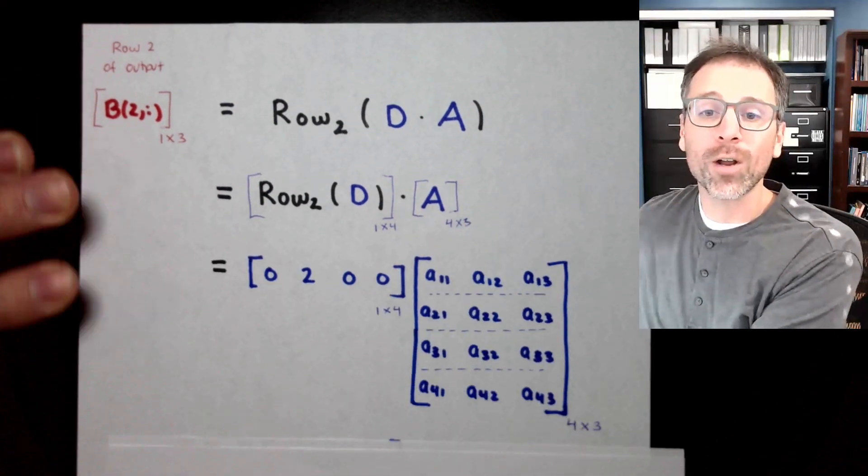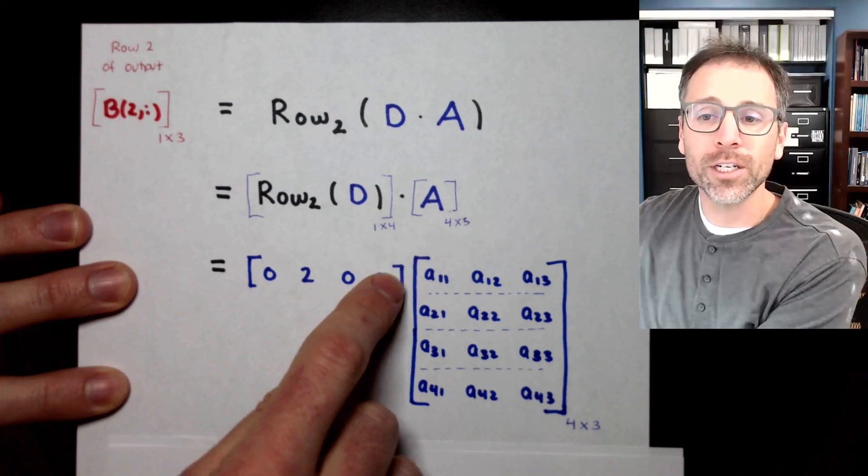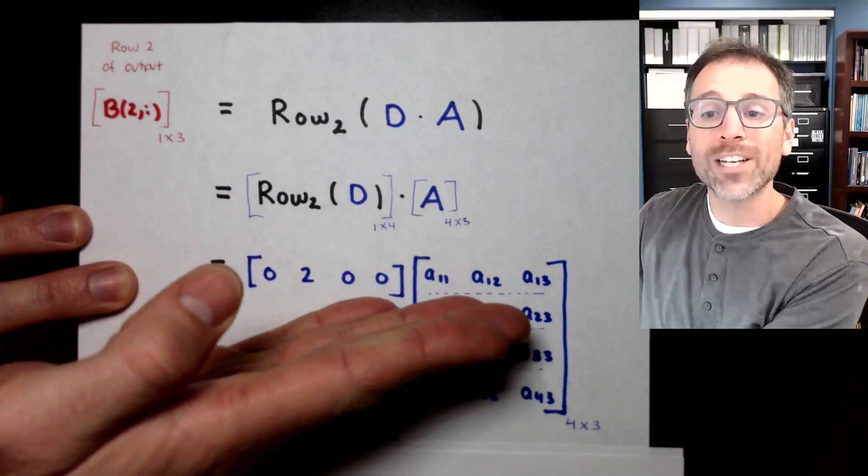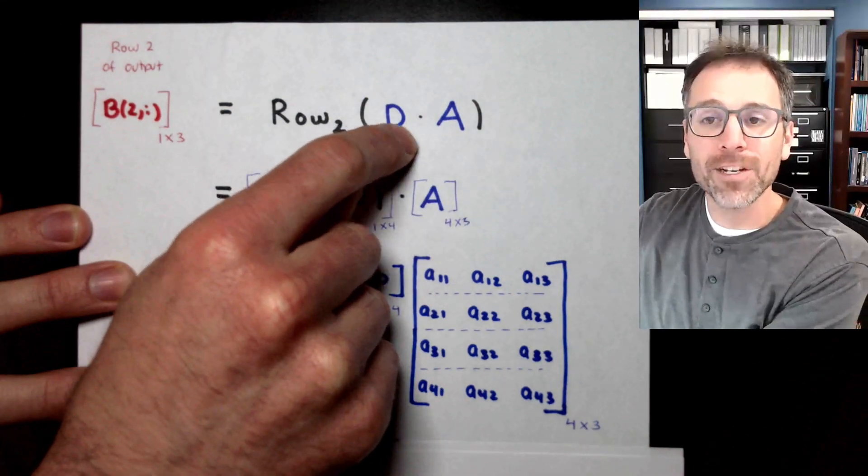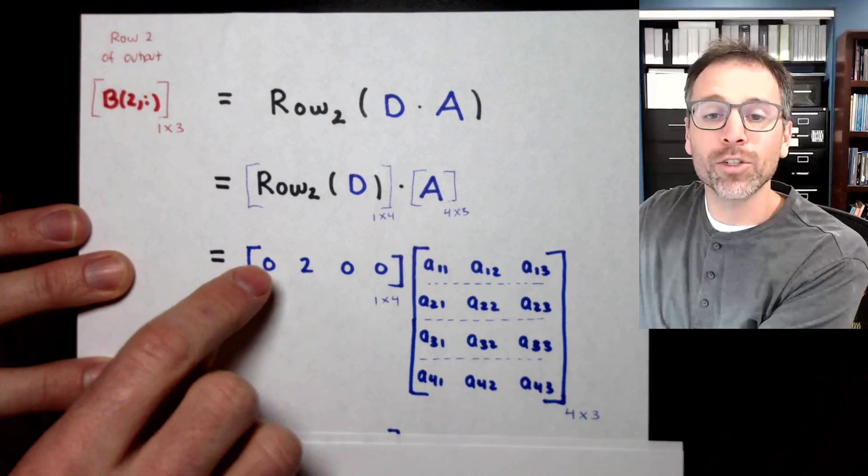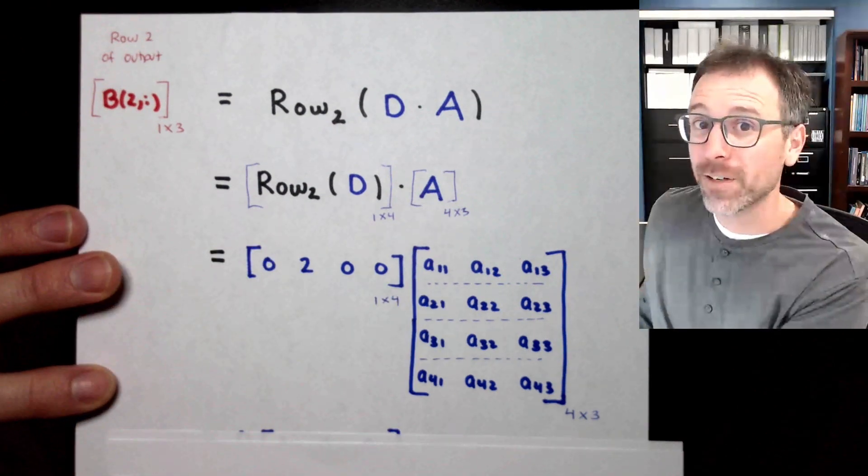Well, we know that our left matrix, row 2, was 0, 2, 0, 0. Our right matrix is just a general 4 by 3 modeling matrix. We chop it into rows since we're doing left matrix multiplication. We're hitting A on the left. So now what we're going to do is row vector matrix multiplication. Do you remember the definition?